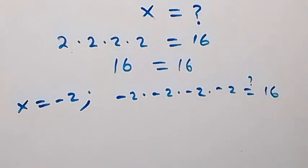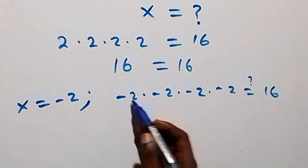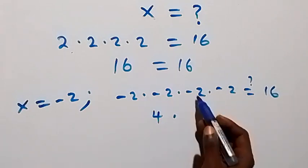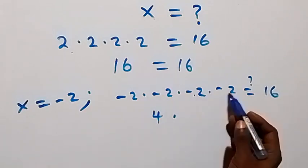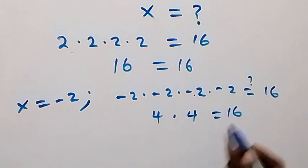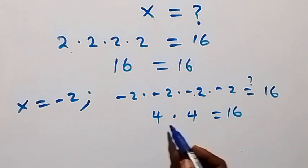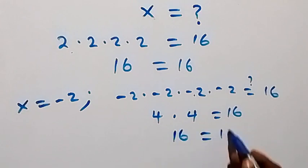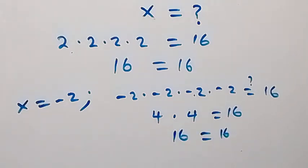For x equals minus 2: minus 2 times minus 2 is 4, and minus 2 times minus 2 is also 4. So 4 times 4 equals 16, which equals 16. The left hand side equals the right hand side, and this also satisfies the given problem.